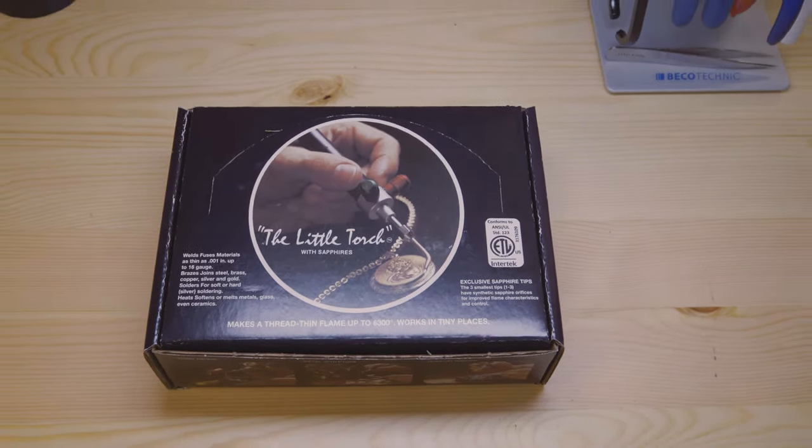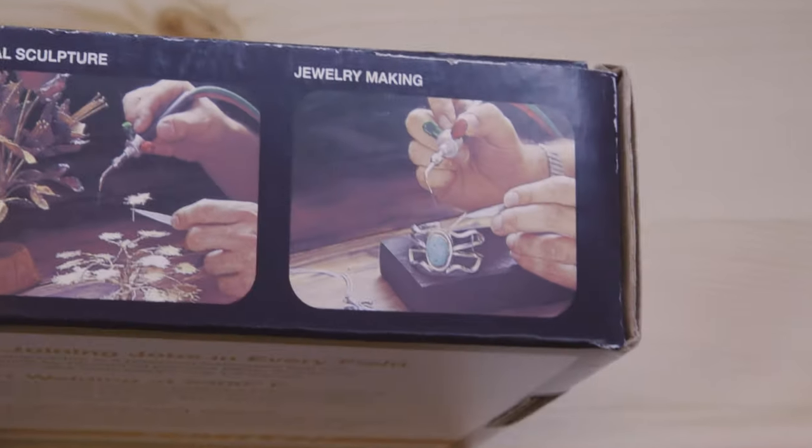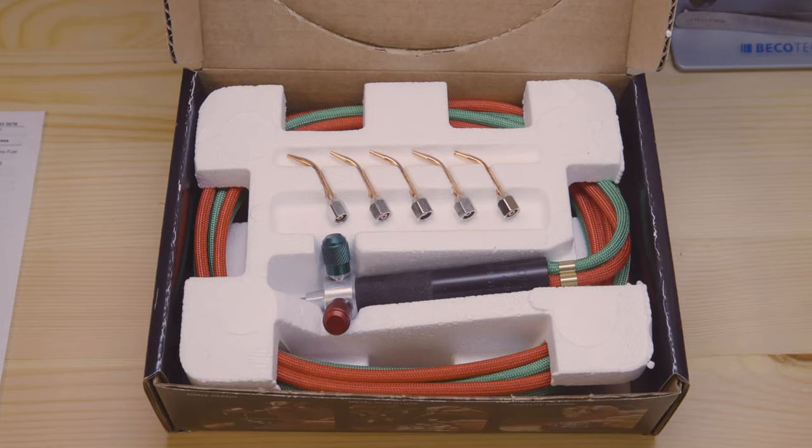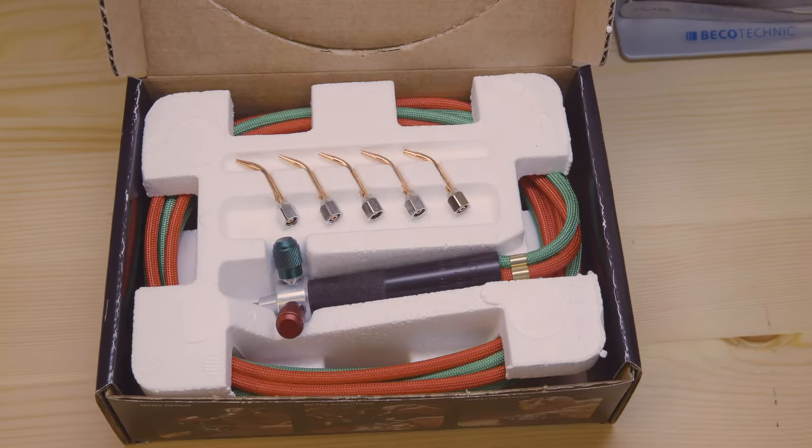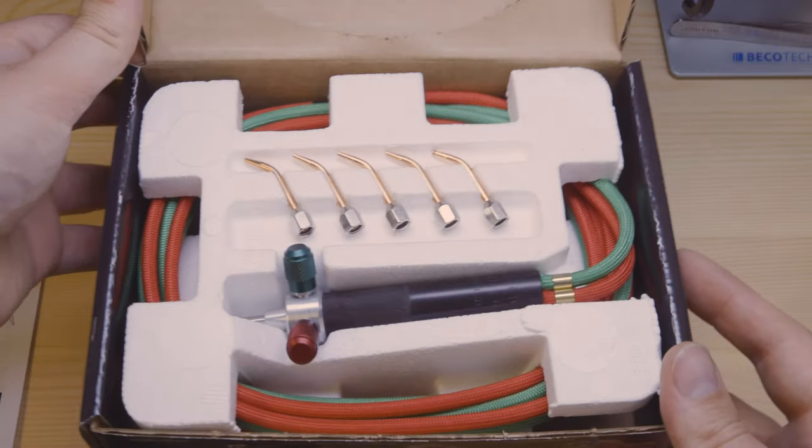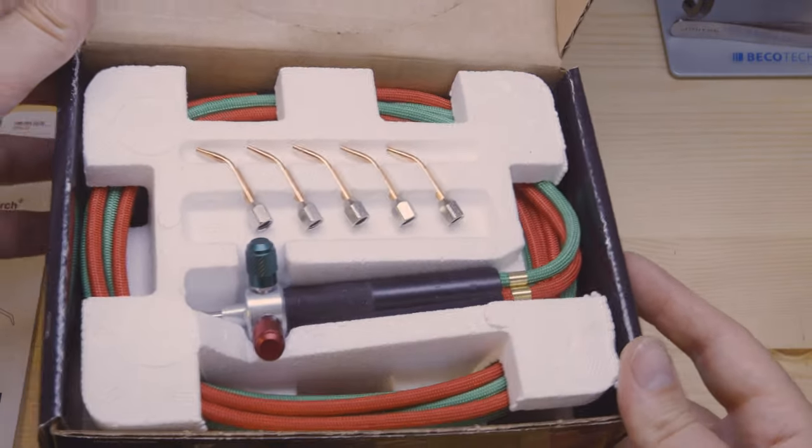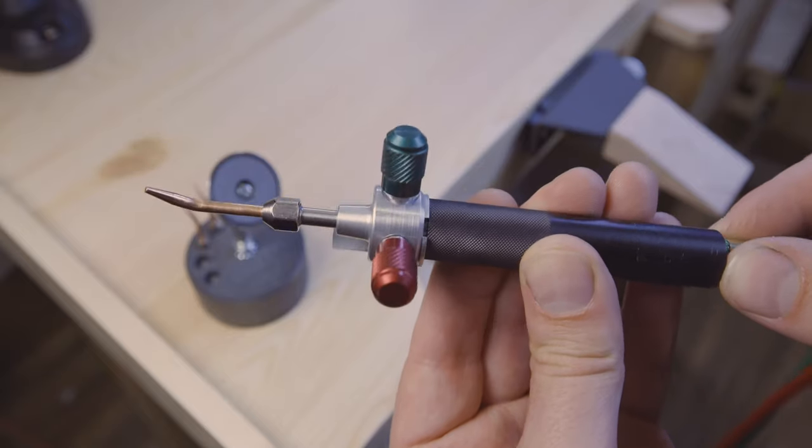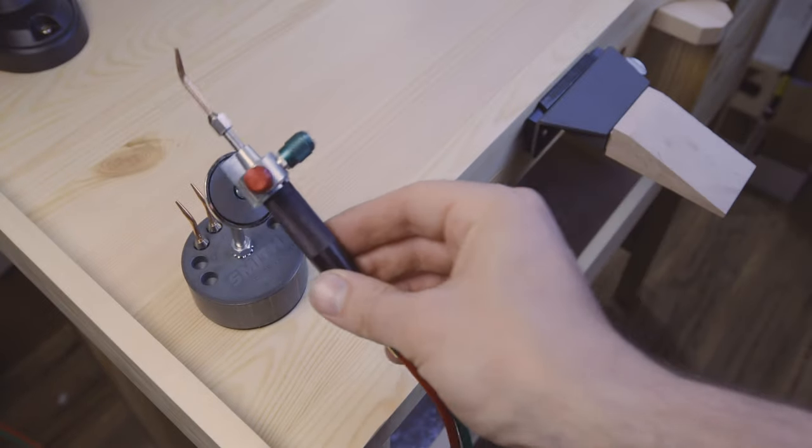And now for one of my favorite tools in the shop: the little torch. Made for little flames, perfect for jewelry. The build quality is just exceptional. It feels so good in your hand. It comes with an assortment of torch tips for different flame sizes. This magnetic holder works well too.